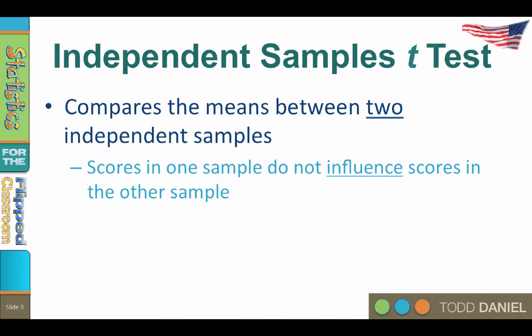By contrast, if you were in one group and your twin was in the other group, or if you had been measured before and after an intervention, then those scores would not be independent.